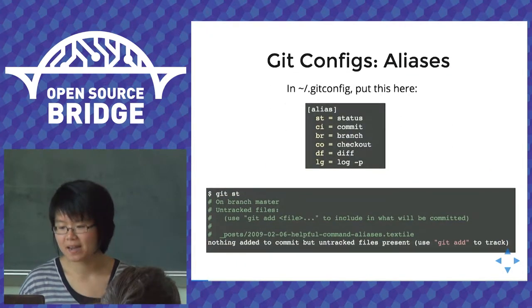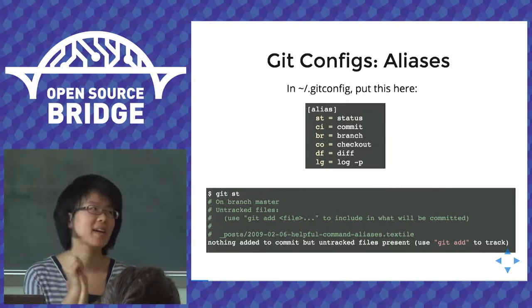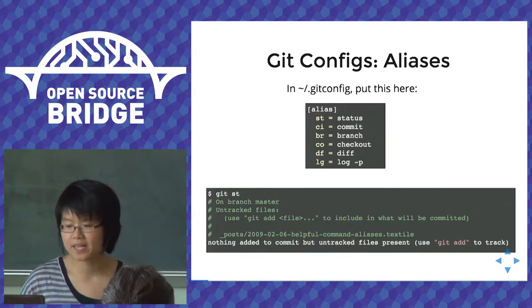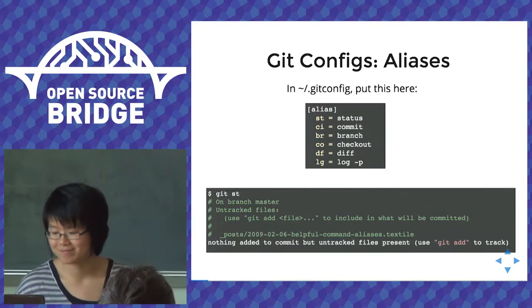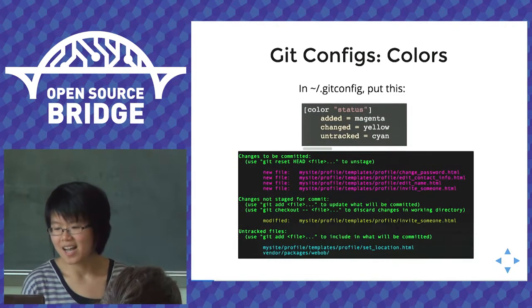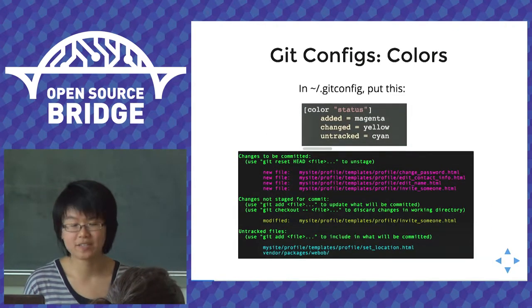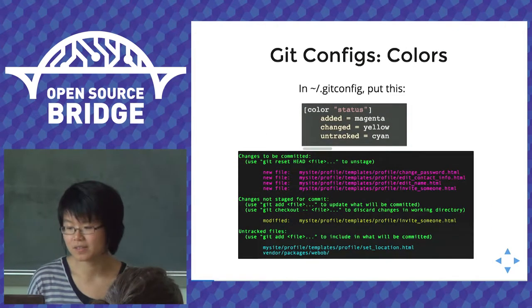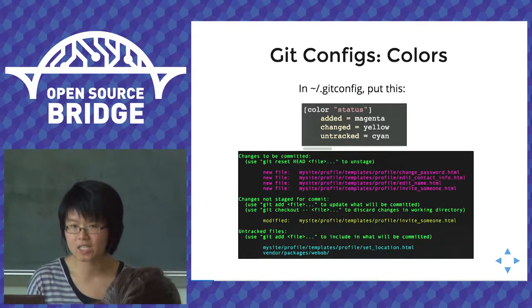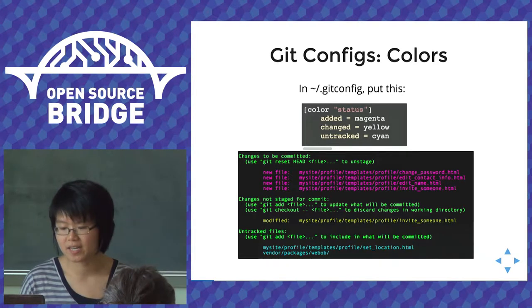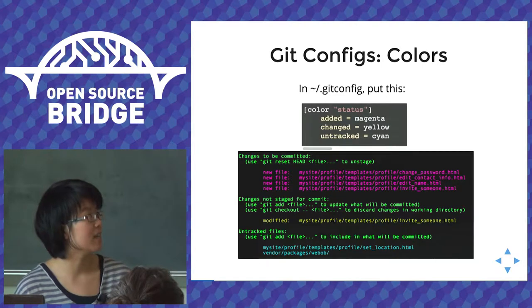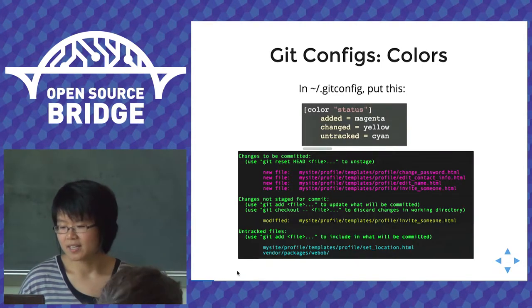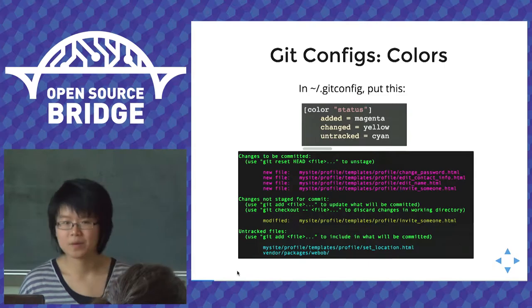Git aliases help you type out shortcut commands, so instead of typing out the entire full-long Git command, you can put a snippet into your Git config file and start typing out the shortcut codes. Color coding your working directory is pretty useful too — you can add a snippet into your Git config, and every time you type Git status, your untracked files and modified files will be color coded, as well as changes to be committed. It helps visually organize what's going on in your working directory.